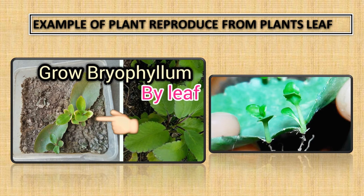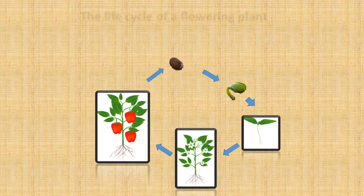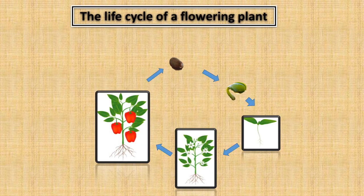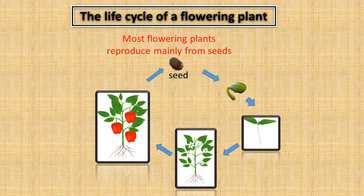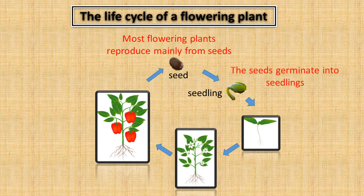The Life Cycle of the Flowering Plant. Seed: most flowering plants reproduce mainly from seeds. The seed germinates into a seedling.